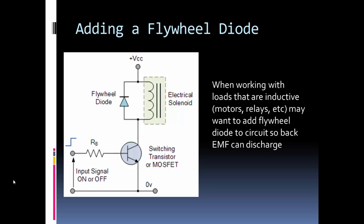And so the flywheel diode allows current to flow in the opposite direction. It blocks it in one direction if you're familiar with the diode. But the diode will forward bias if there's any back EMF that wants to flow out of the inductive load that you're working with. So just something to note.